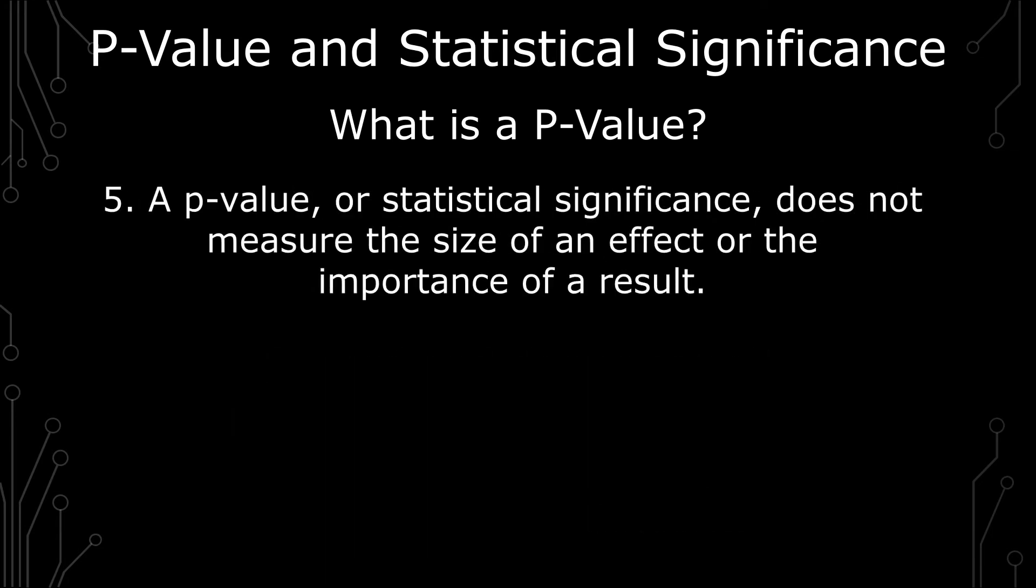Number five is a p-value or statistical significance does not measure the size and effect or the importance of a result. That may be contrary to a lot of people's thinking. So the effect is obviously in most cases especially if you're doing a regression you're going to understand that the coefficient is what really measures the effect.